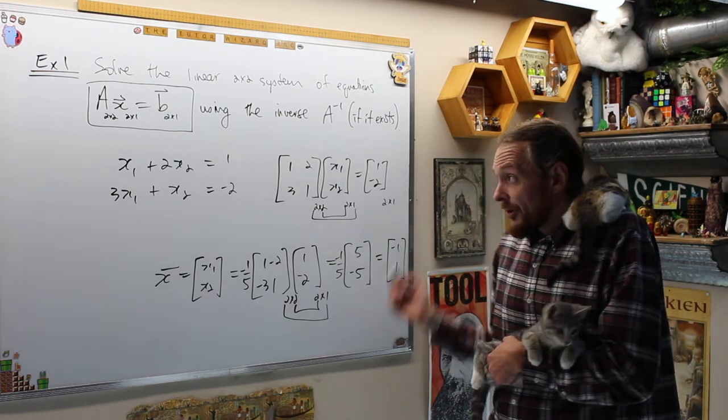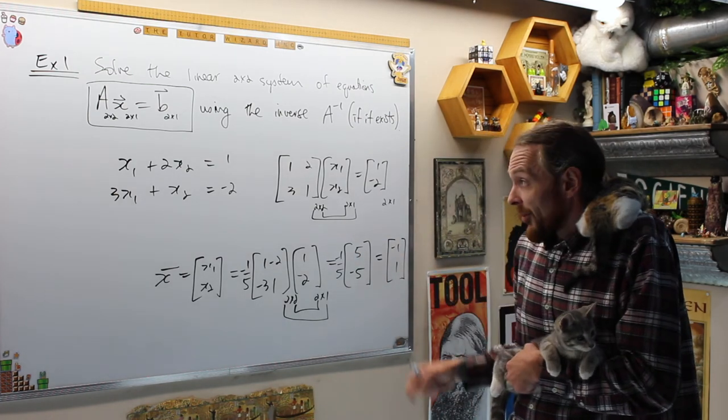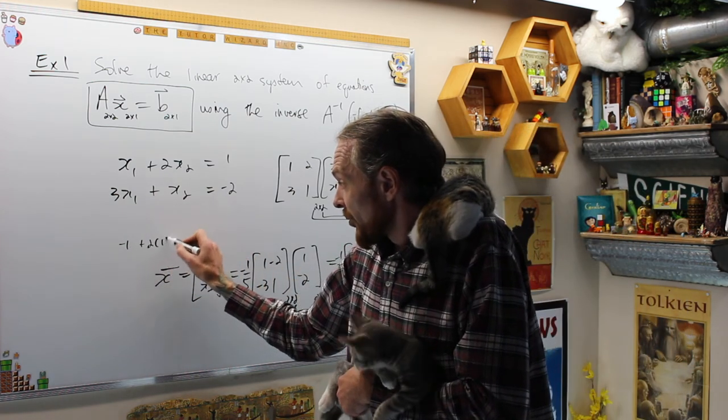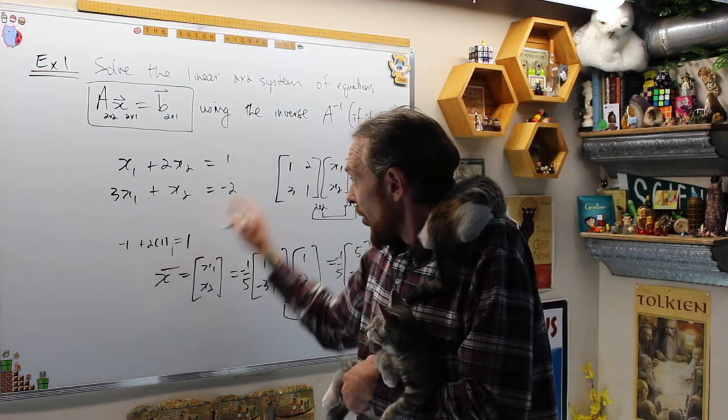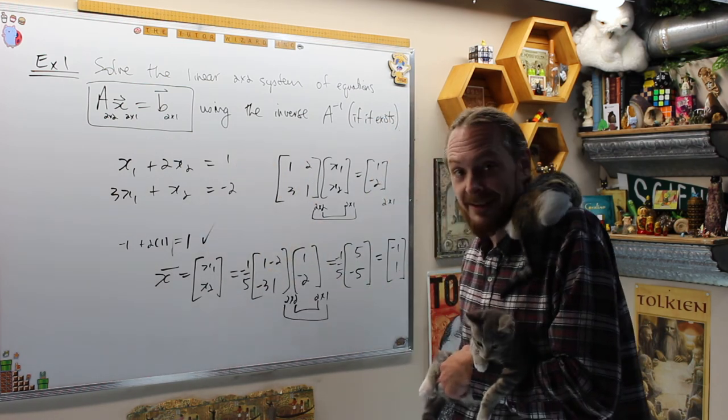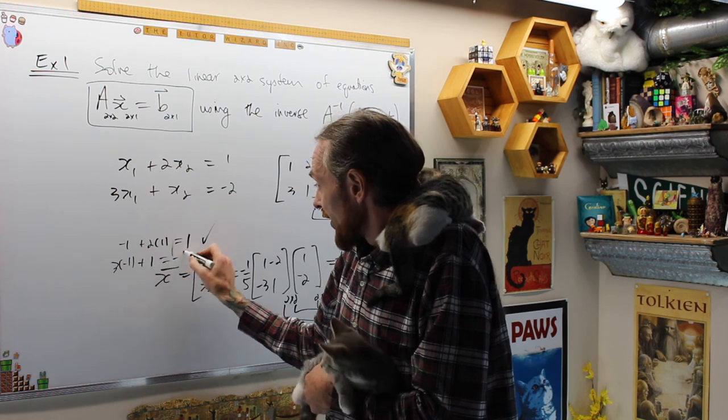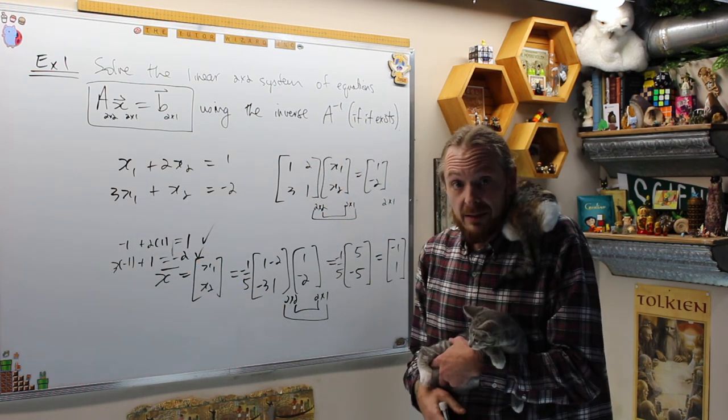You can put them in there and check. If I put those in there, what do I get? Negative 1 plus 2 times 1 is 1. Check. And then what is the other one? If I have 3 times negative 1 plus 1, that is negative 2. Check. This is the unique solution.